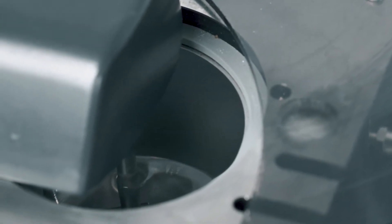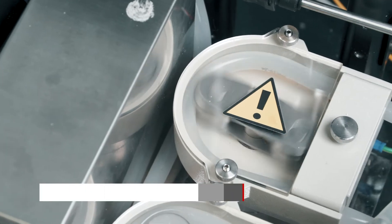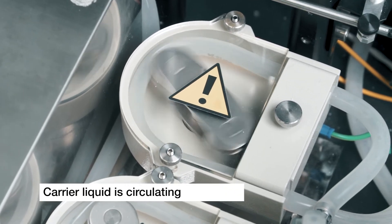Wet measurements are done in a carrier liquid which moves in a closed loop containing the sample tank and the measurement cell.